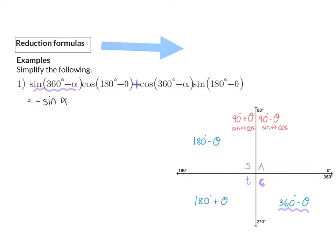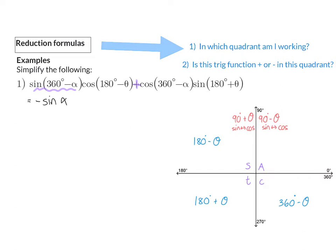When using reduction formulas, you always ask yourself two questions: first, in which quadrant am I working? Second, in this quadrant, is this specific trig function positive or negative? This tells you whether you need to add a negative value in front when you change to an acute angle. Our next function is cos(180 − θ), which is in the second quadrant where only sin is positive, so it becomes negative cos(θ).